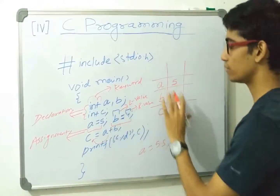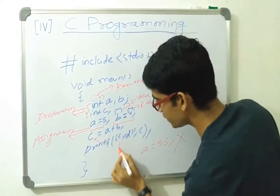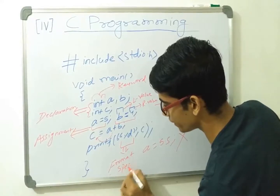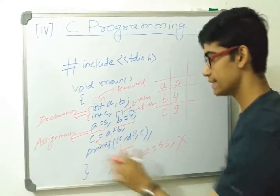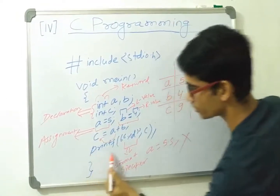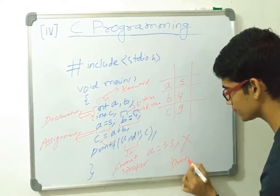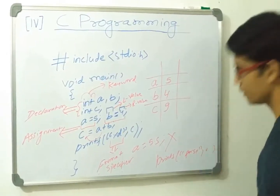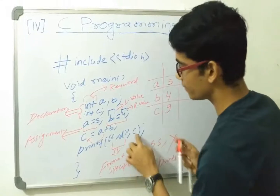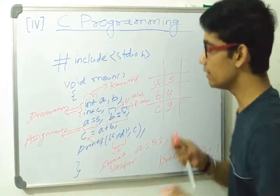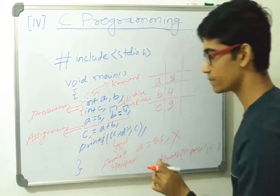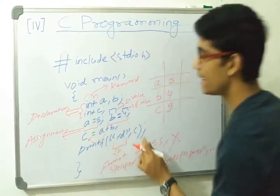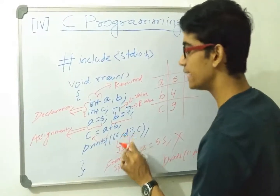Now this '%d' inside printf is a new thing — it is known as a format specifier. The basic construct of printf is: printf(format specifier, variables). When we need to print the value stored in a variable, we must use a format specifier. Since c is of integer type, we use '%d'. Had it been float, we would use '%f'.